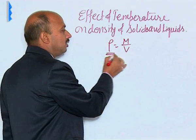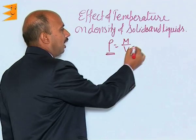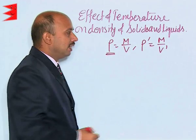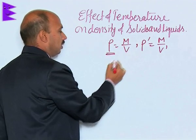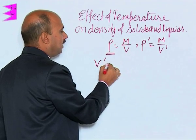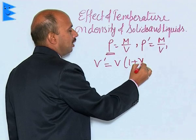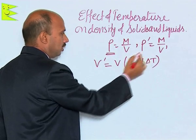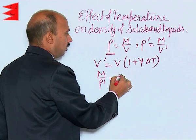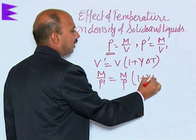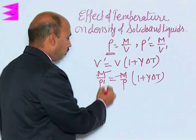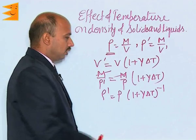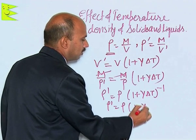Initial density rho is equal to M upon V. When temperature increases by delta T, density becomes M upon V dash, where the new volume V dash is equal to V into (1 plus gamma delta T). From here, M upon rho dash is equal to M upon rho into (1 plus gamma delta T). The M's cancel, so rho dash is equal to rho into (1 plus gamma delta T) raised to power minus 1, which can be written as rho dash is equal to rho into (1 minus gamma delta T).